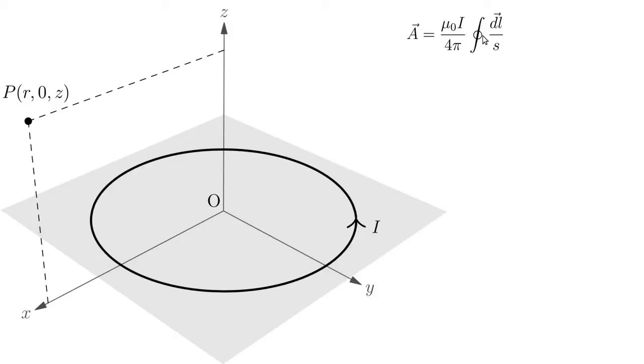It's just a scalar multiplied by a line integral dL over s. Now dL is just our infinitesimal line segment and s is the distance from that line segment to the point P that we want to find the magnetic field at. So we're going to integrate that from 0 to 2π around the current loop.